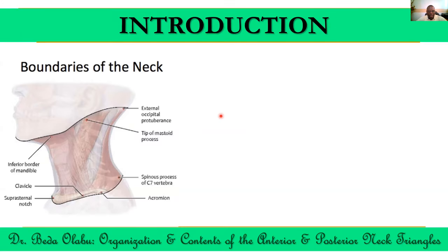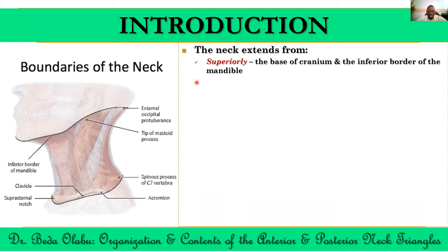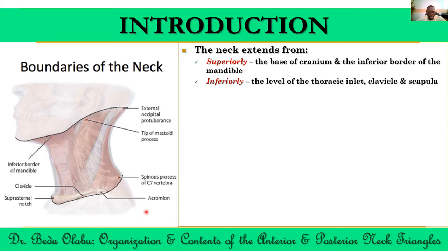Before we talk about the neck triangles themselves, it's important to understand the extent of the neck. The neck extends from above the lower border of the mandible as well as the base of the cranium superiorly. The inferior extent includes the level of the thoracic inlet, the clavicle on the lateral aspect, and parts of the scapula going back to the vertebral column. The thoracic inlet is the junction between the neck and thorax, bounded anteriorly by the manubrium of the sternum, posteriorly by the T1 vertebra, and laterally by the first rib.